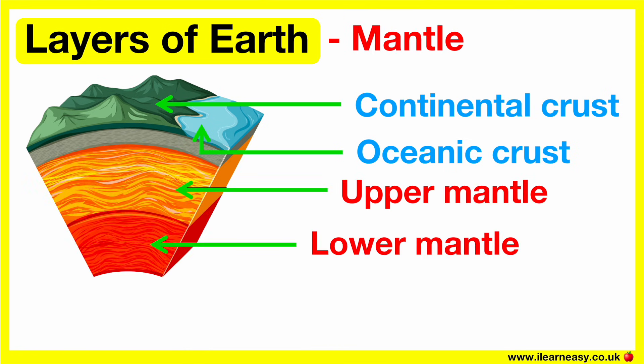The mantle. The mantle is the thickest and largest section of the Earth. The mantle makes up about 85% of the total mass of the Earth. It's about 2,900 kilometers thick. This layer is made up of very hard rocks and hot solid rocks. A lot of the planet's mantle consists of magma.